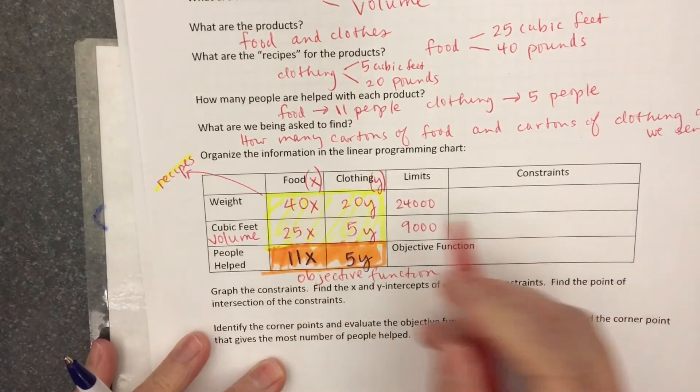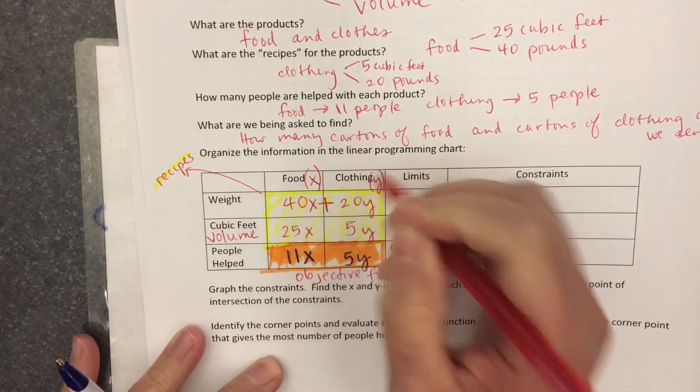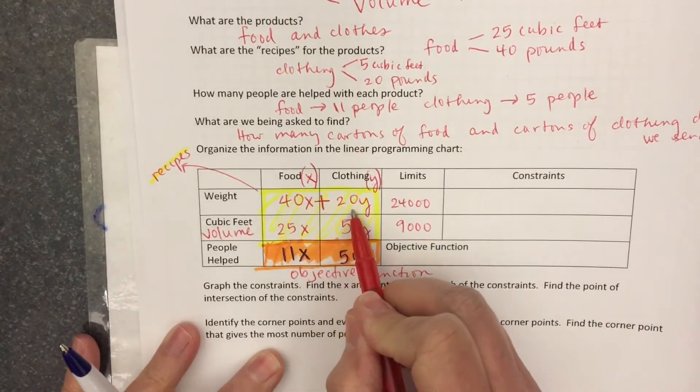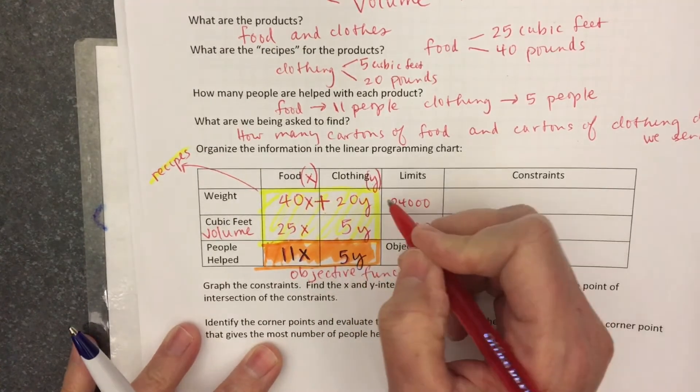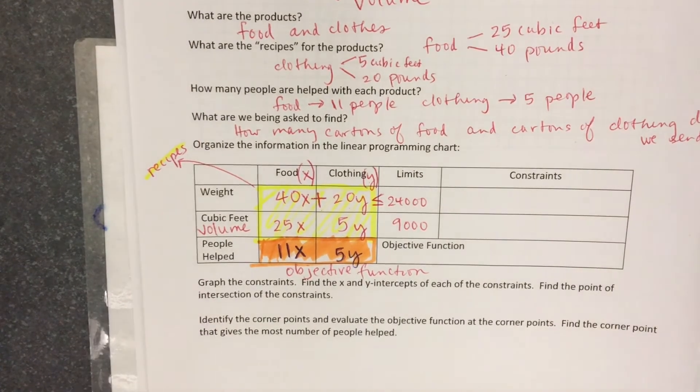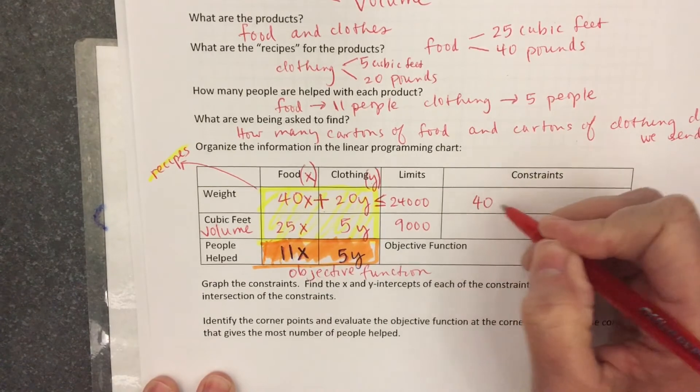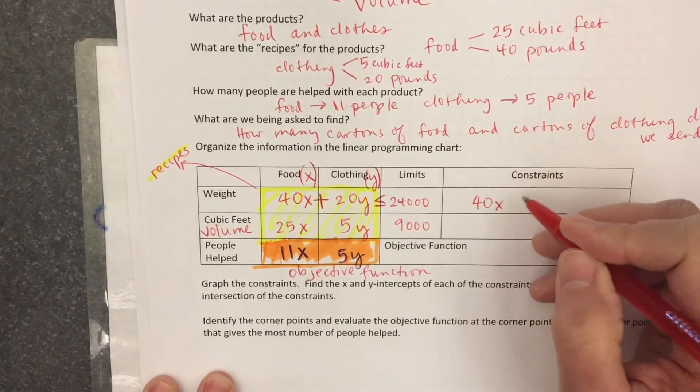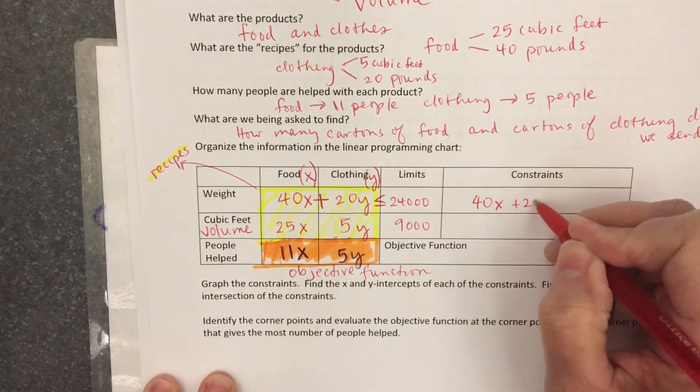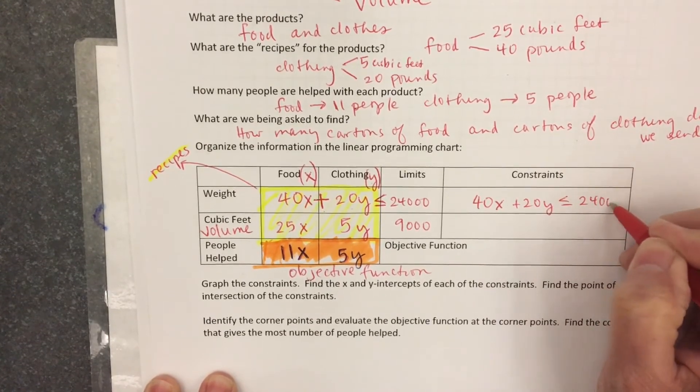Read this straight across. The weight from the food, which is 40X, plus the weight from the clothing, must be less than or equal to 24,000. That's one of the constraints. I'm gonna write it in the space for constraint: 40X plus 20Y is less than or equal to 24,000.